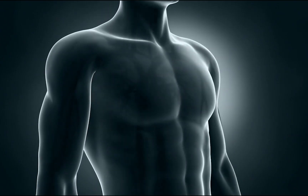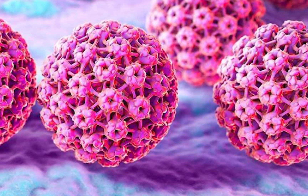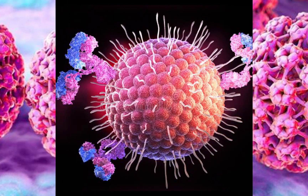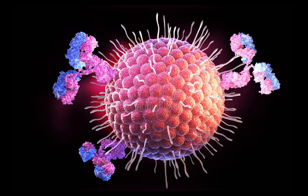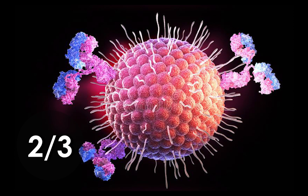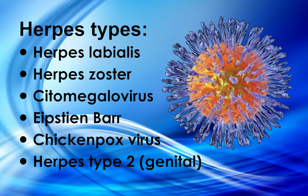Viruses are also found in great number and variety in the human organism. For example, the human papillomavirus is estimated to be present in more than 80% of adults. And herpes — of which biomagnetism has identified at least nine different types — is estimated to be present in two-thirds of the world's population, with a slightly higher incidence in women than in men. Herpes has different species: type 1 such as cold sores, herpes zoster, cytomegalovirus, Epstein-Barr, varicellovirus, and herpes type 2 — genital — which is transmitted mainly through sexual contact.